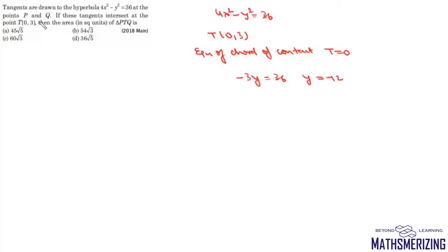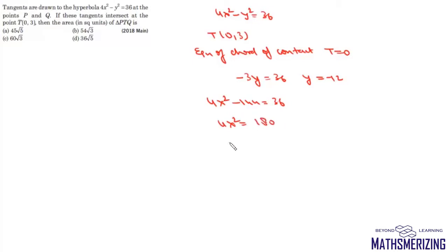Now we find points P and Q, which are the points of intersection of this chord of contact and the hyperbola. We put the value of y as minus 12, so we get 4x² minus 144 equals 36, which gives 4x² equals 180, so x² equals 45.